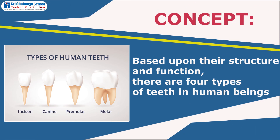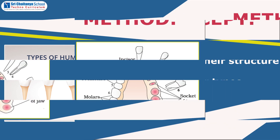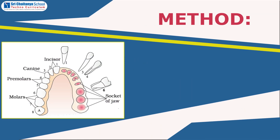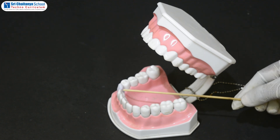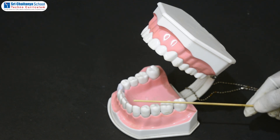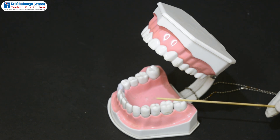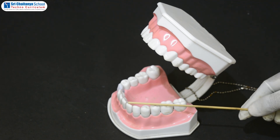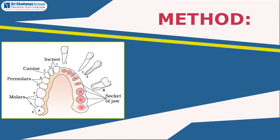Based on their structure and function, there are four types of teeth in human beings. Observe the given model of human teeth. Try to identify different types of teeth on the basis of their characteristics. Draw the diagram of different types of human teeth and record your observations.